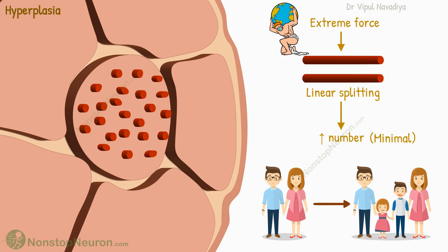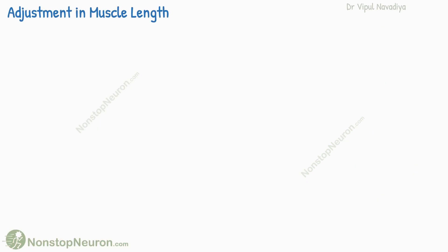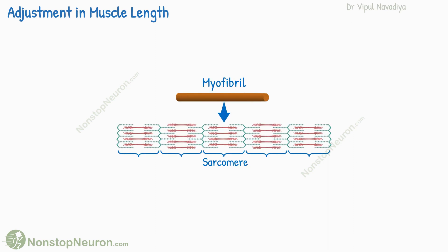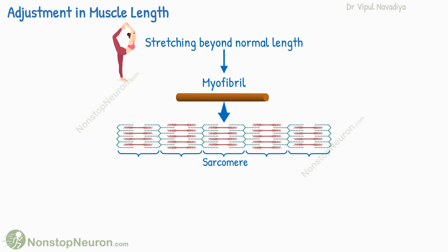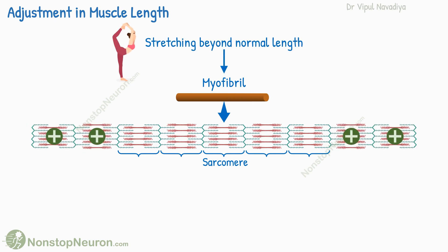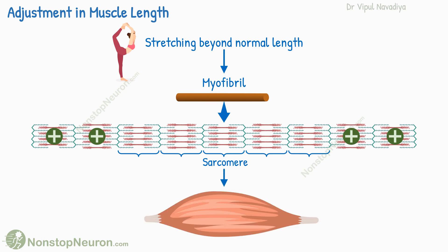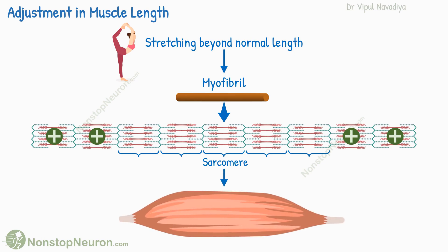Now let's talk about adjusting the length of the muscle. We know that myofibrils are made up of an array of sarcomeres. When muscles are stretched beyond their normal length, new sarcomeres are added at the ends of the muscle fibers, resulting in the lengthening of the muscle. This lengthening helps accommodate the increased stretch.